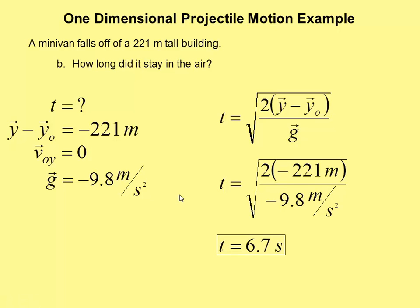So, if I'm riding in that minivan, I have a little less than 7 seconds before I hit the ground going about 150 miles an hour.